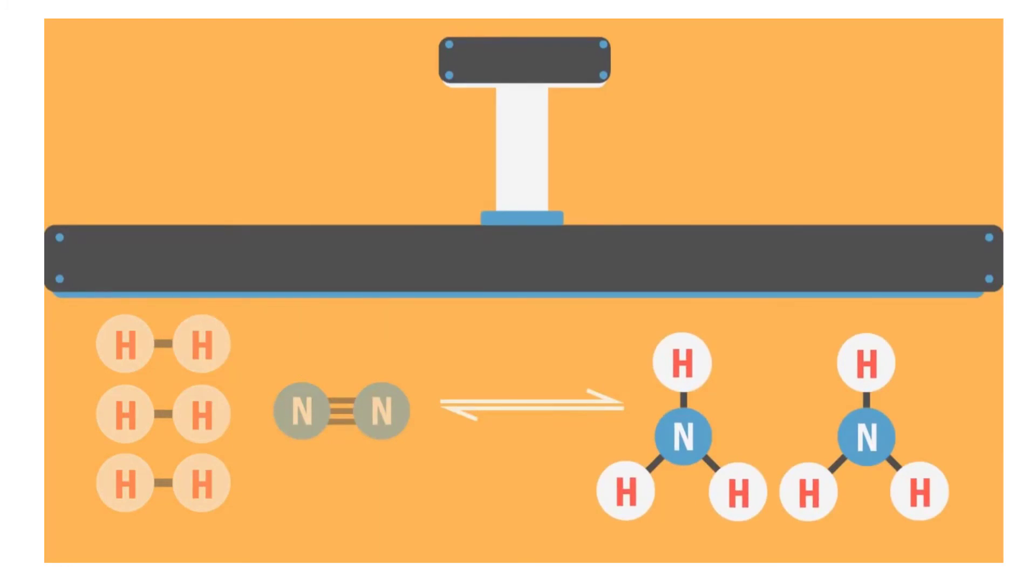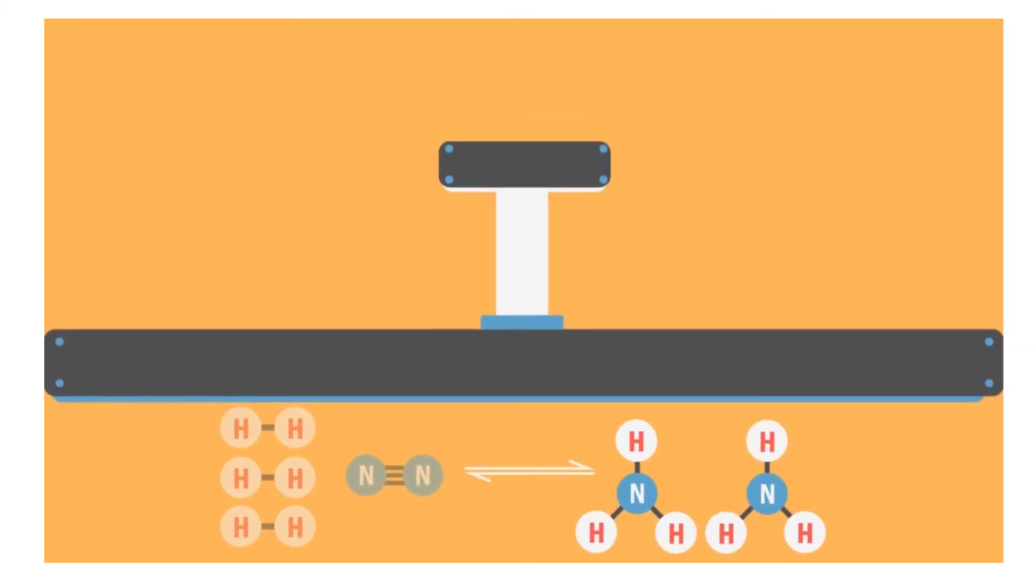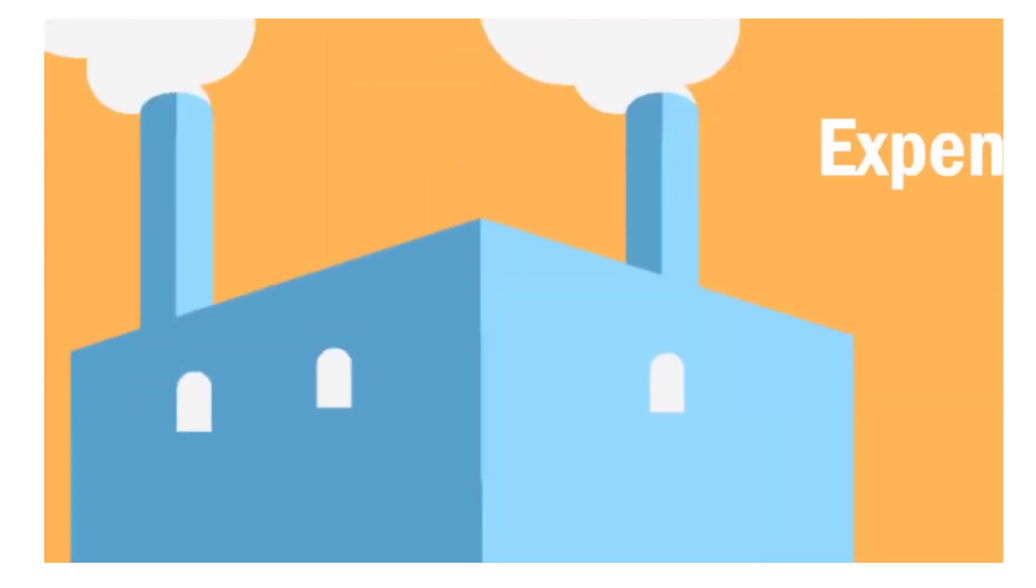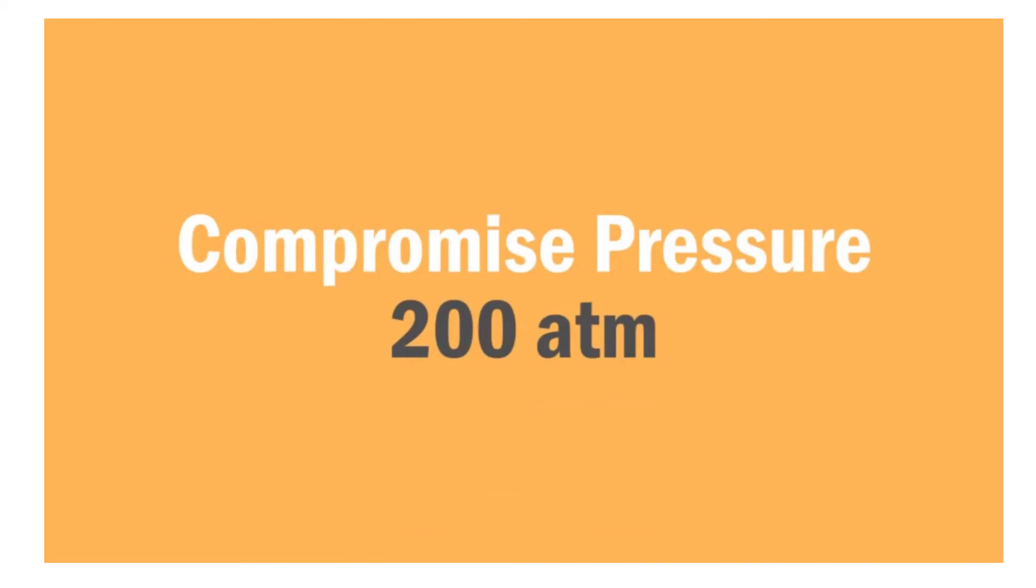It would make sense to conduct the reaction at a very high pressure, but we must also remember that it is expensive to build and operate a plant that can withstand such high pressures. Therefore, a compromised pressure of 200 atmospheres is used. Let's keep Le Chatelier's principle in mind.